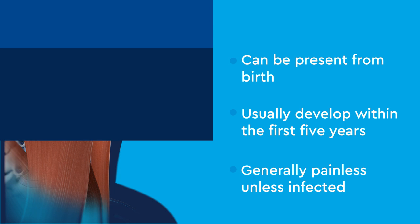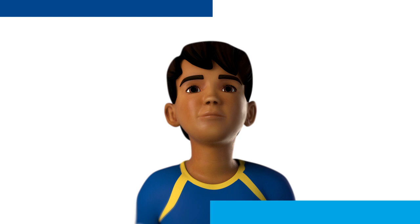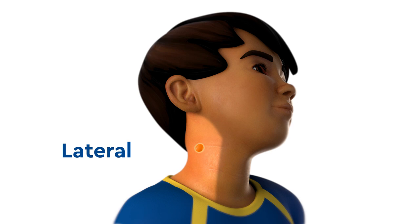A solid mass is a dense lump of tissue, while a cystic mass is a sac that fills with fluid. Neck masses can be central, on the front of the neck, or lateral, on the left or right side of the neck.